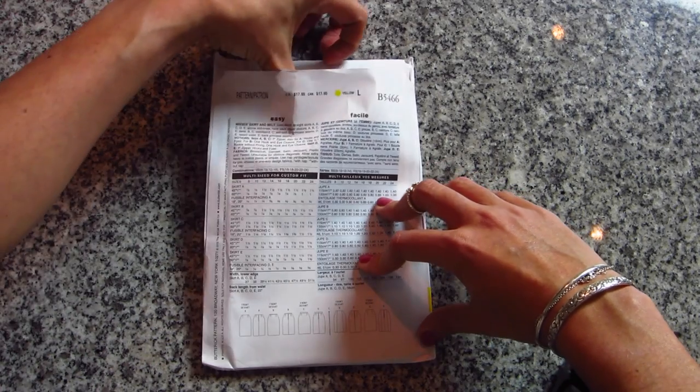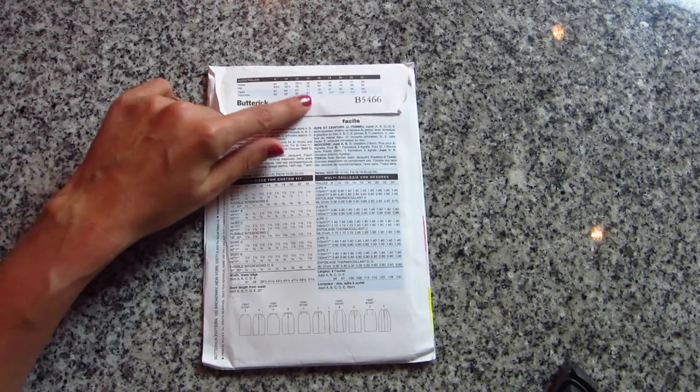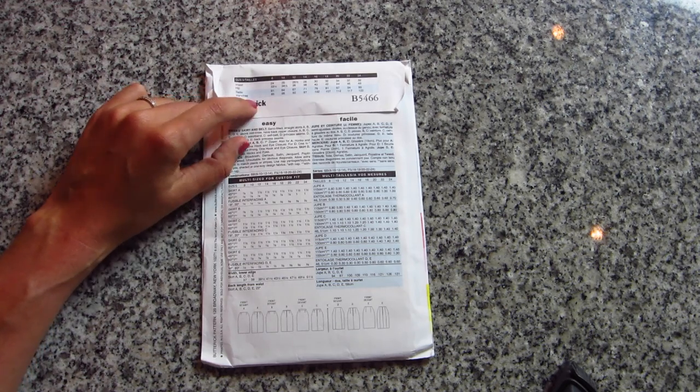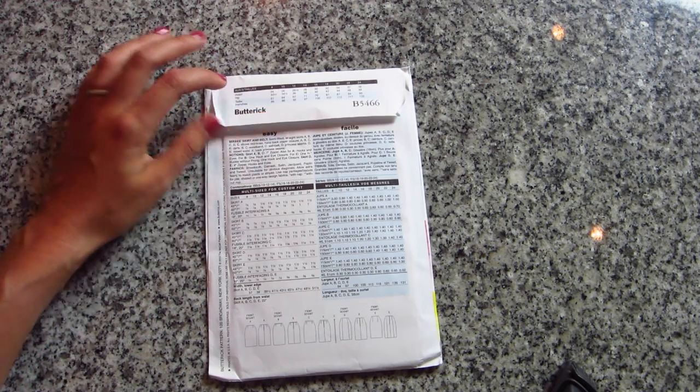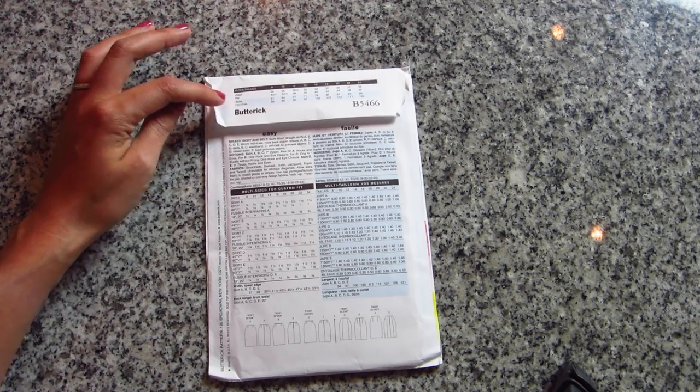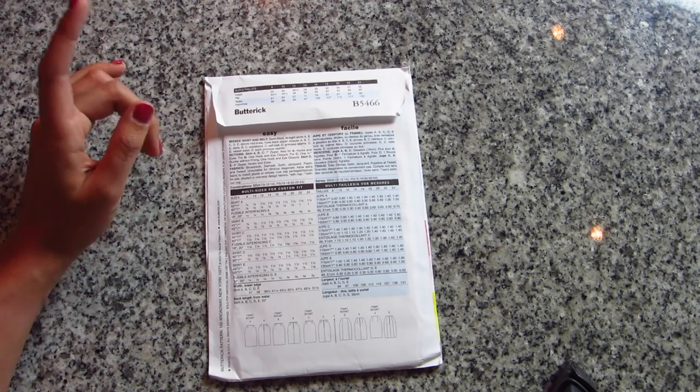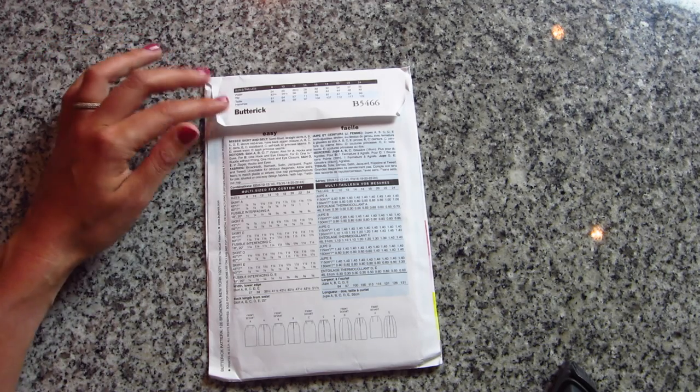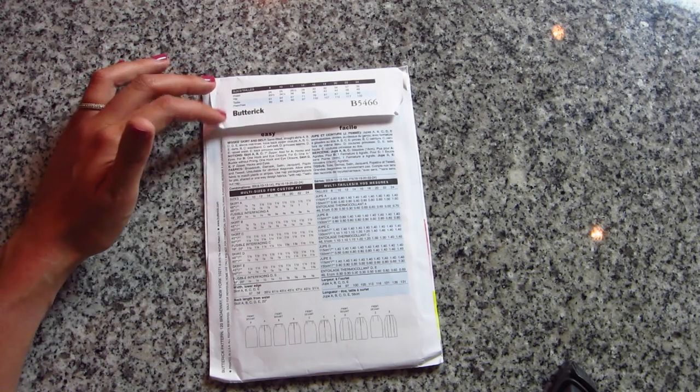The sizes are sometimes listed in a chart like this, but sometimes they're also listed on the little tab of the pattern envelope. And that's where these are here. So what you're going to need is your waist and your hip measurement. Now, if you're making something that has a bodice, like a dress or a shirt, you're also going to need your bust measurement, but they don't include that here, obviously, because you don't need a bust measurement to make this.